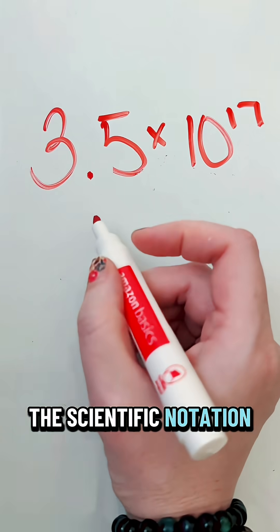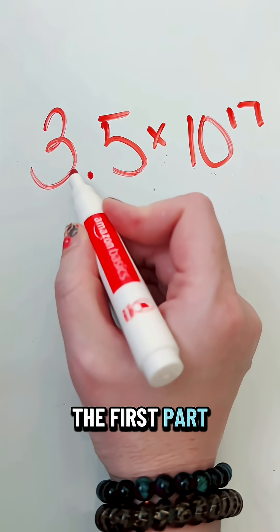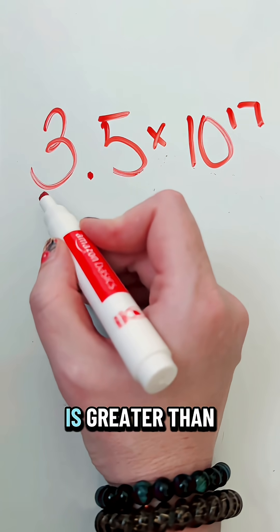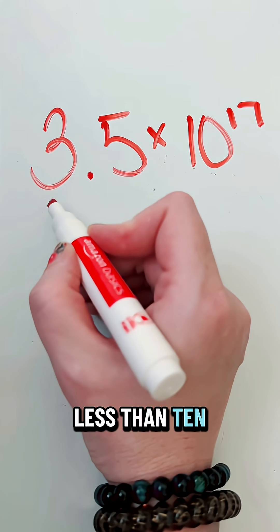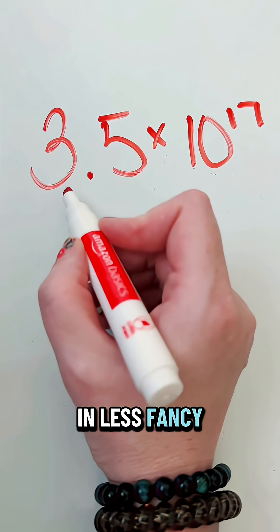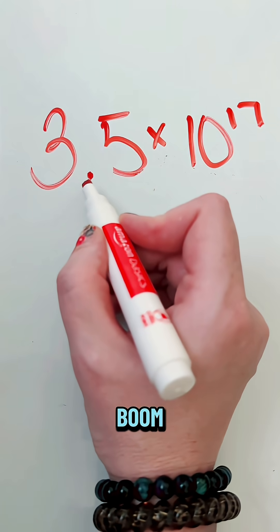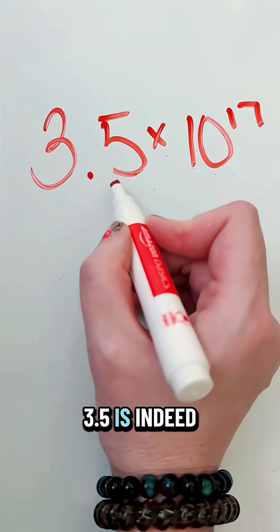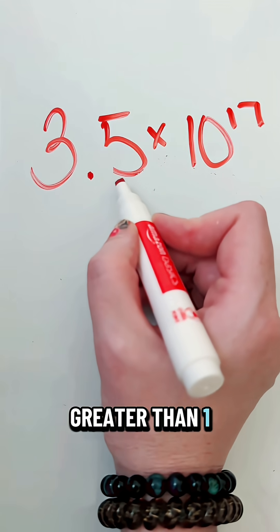Let's talk about the scientific notation format. The first part, your coefficient, is a number that is greater than 1, less than 10. In less fancy terms, it's one digit, boom, decimal point. So 3.5 is indeed greater than 1, less than 10.